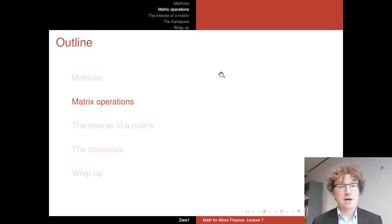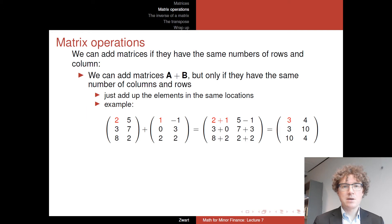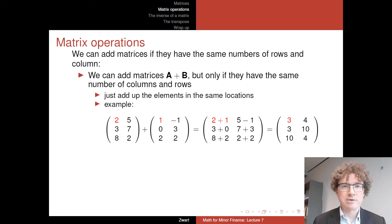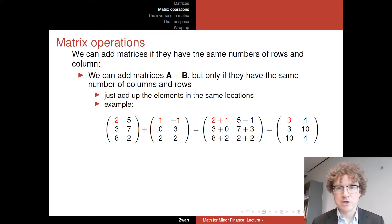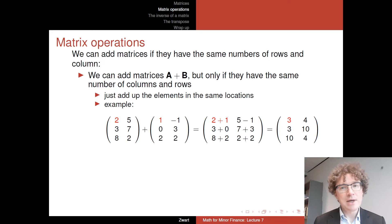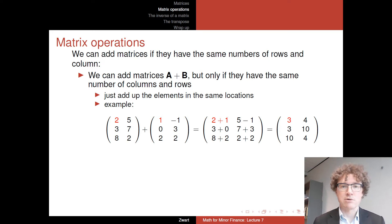Let's have a look at matrix operations. The first operation is adding up matrices, which is particularly simple. The key thing to note is that we can only add matrices A and B if they have the same number of columns and rows — that is, the same dimensions.